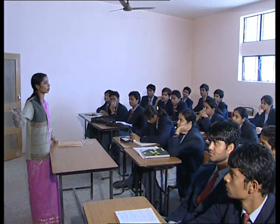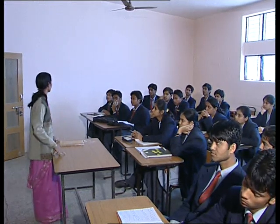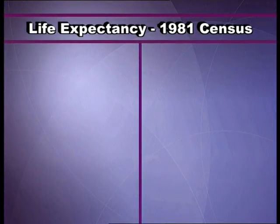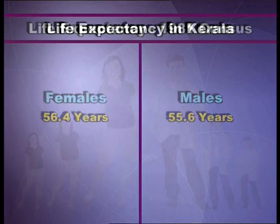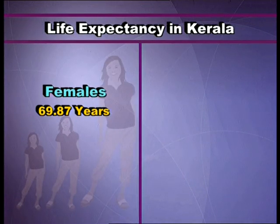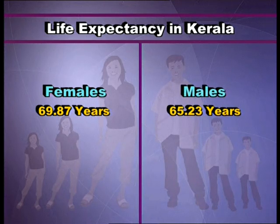The unfavourable sex ratio decreases female life expectancy in comparison to males. But the 1981 census has shown that the female ratio was a shade better — the average life expectancy for females at birth was 56.4 and for males was 55.6. In Kerala, it is far better: 69.87 for females and 65.23 for males, meaning Kerala women live longer than males. Illiteracy is one of the most important factors responsible for the low percentage of females. Developed countries have overcome the sex difference by totally wiping out illiteracy. With literacy comes awareness about the importance of hygiene, sanitation, nutrition, and pre- and post-natal care on scientific lines.